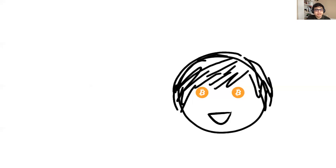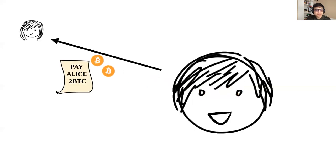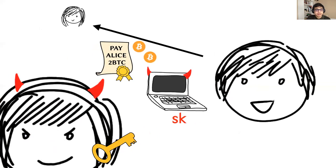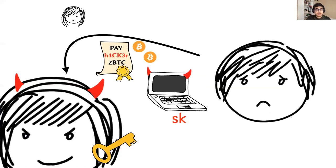Let's say Bob would like to send some bitcoin to his friend Alice. He creates a message to that effect, takes out his laptop with his signing key, and presses a button to produce a signature. However, an attacker could hack into Bob's laptop, steal his secret key, and divert funds to herself, as she has unrestricted access to Bob's account.